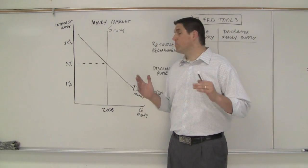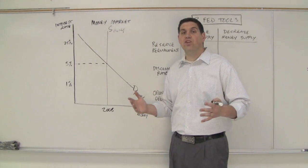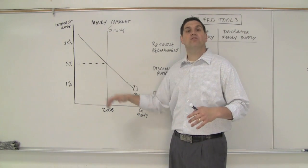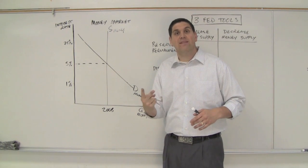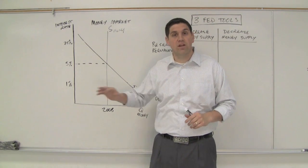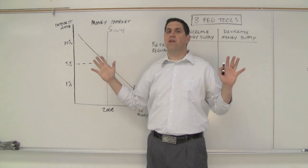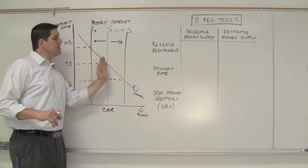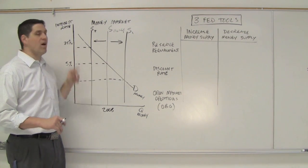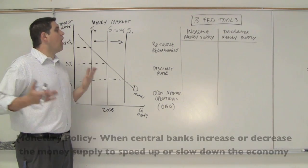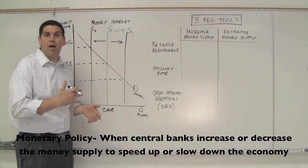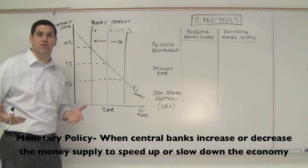This demand curve can shift — if people's spending habits change or if there's inflation, the demand curve can go up or down based on transaction demand and asset demand. The key to understanding monetary policy is understanding interest rates. If the Fed increases the money supply, it'll drive down interest rates. If the Fed decreases the money supply, it'll drive up interest rates. All monetary policy is increasing and decreasing the money supply in an effort to increase or decrease interest rates.